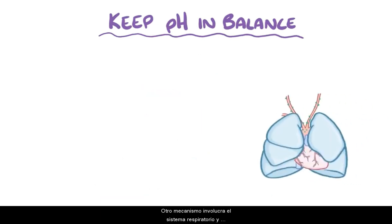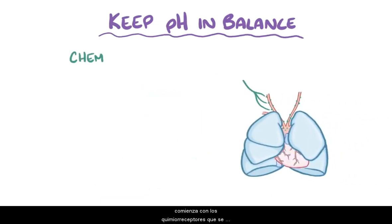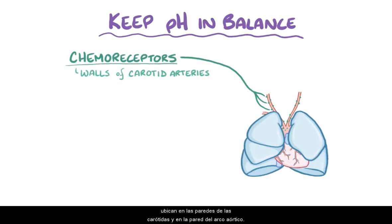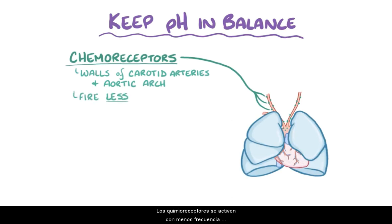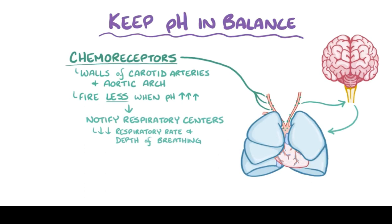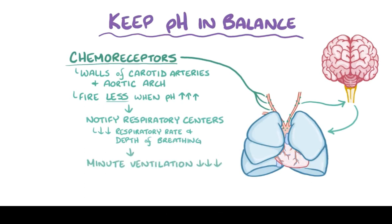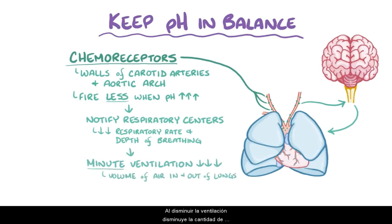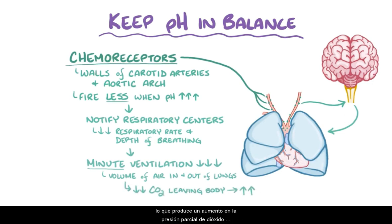Another mechanism involves the respiratory system, and starts with chemoreceptors that are located in the walls of the carotid arteries and in the wall of the aortic arch. These chemoreceptors fire less often when the pH rises, and that notifies the respiratory centers in the brainstem that they need to decrease the respiratory rate and depth of breathing. As the breathing becomes slow and shallow, the minute ventilation decreases — that's the volume of air that moves in and out of the lungs in a minute. The decreased ventilation slows down how much carbon dioxide leaves the body, increasing the partial pressure of carbon dioxide, which decreases the pH.